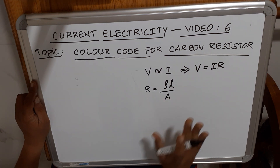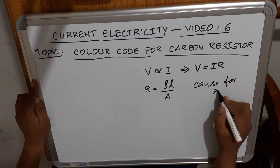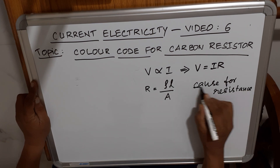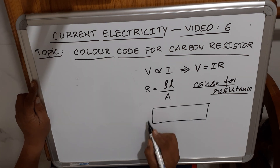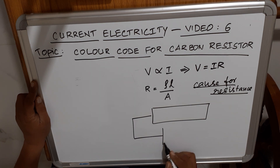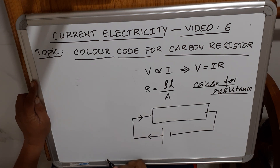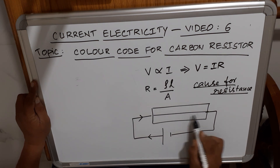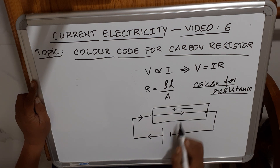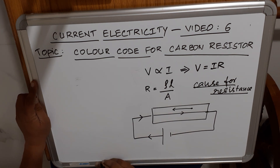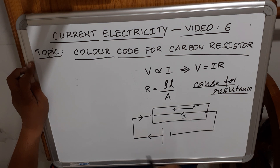Now, what is the cause for resistance in conductors? Suppose this is a conductor connected to a battery — the battery sends current through the conductor. Electrons move in the opposite direction to conventional current. There are two types of current: conventional current and electronic current, both in opposite directions.